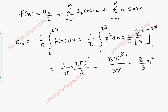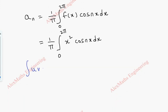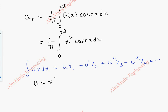Coming to the next part, aₙ. The formula for aₙ is 1 by π, integral 0 to 2π, f of x cos nx dx. This is 1 by π, integral 0 to 2π, x squared into cos nx dx. We are going to use Bernoulli's formula for integrating this. The formula is: integral u·v dx equals u·v₁ minus u'·v₂ plus u''·v₃ minus u'''·v₄ and so on. From this, we have u equal to x squared and v equal to cos nx.